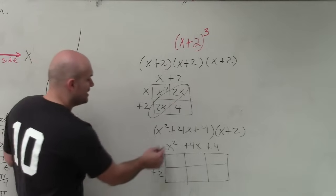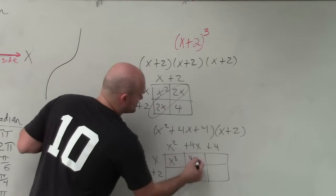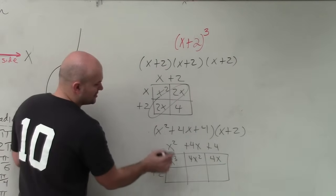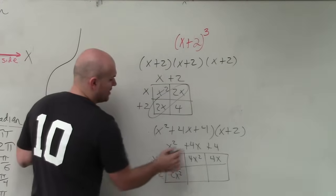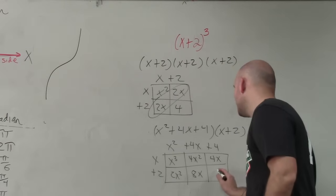So now we just do the same thing. x times x squared is x cubed, x times 4x is 4x squared, x times 4 is 4x, x squared times 2 is 2x squared, 4x times 2 is 8x, and 2 times 4 is 8.